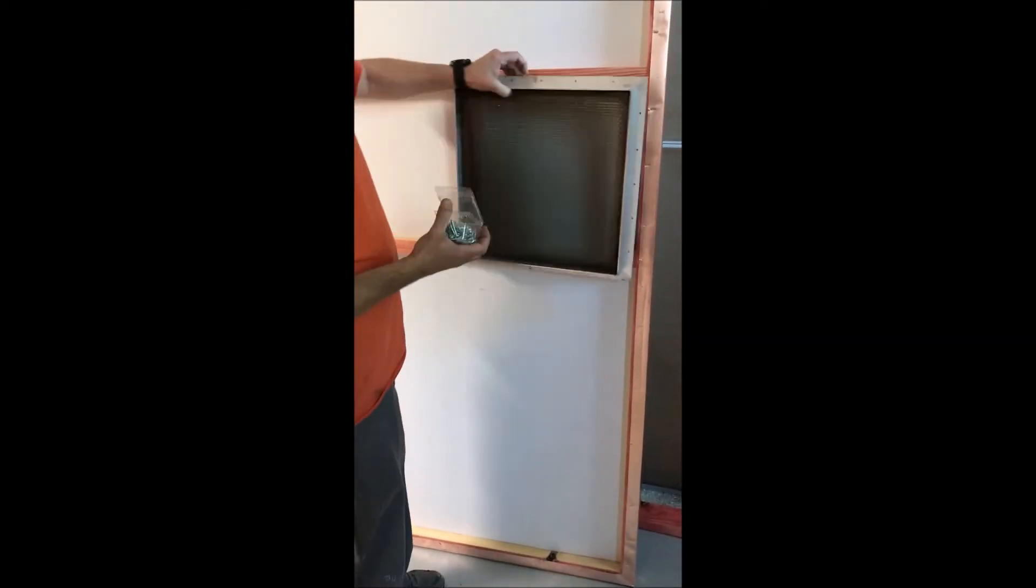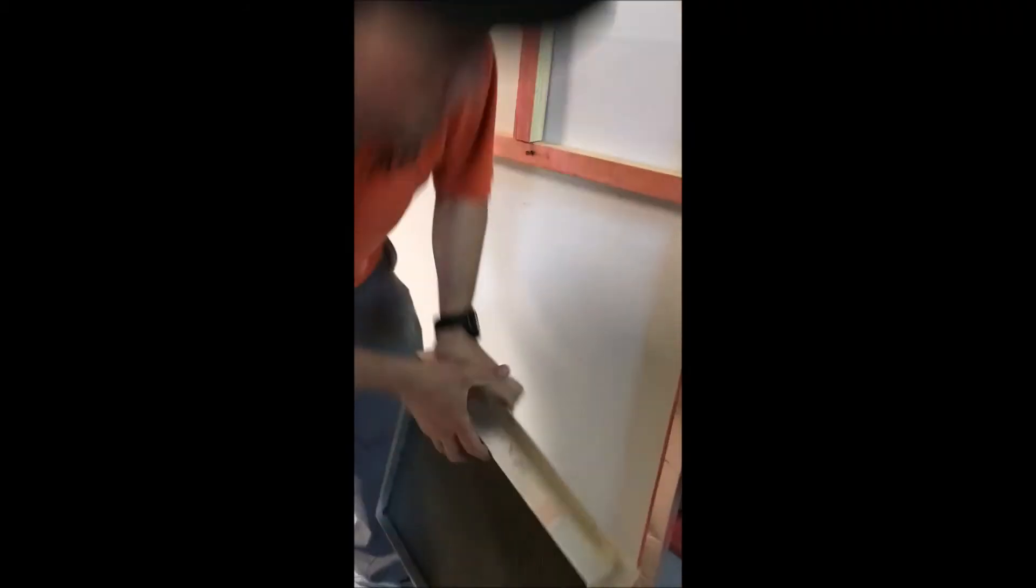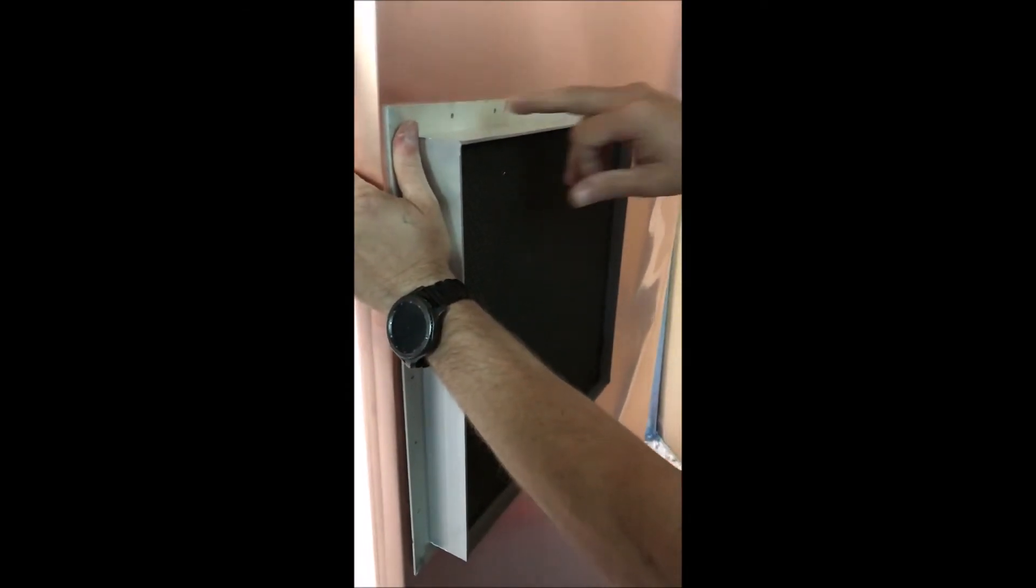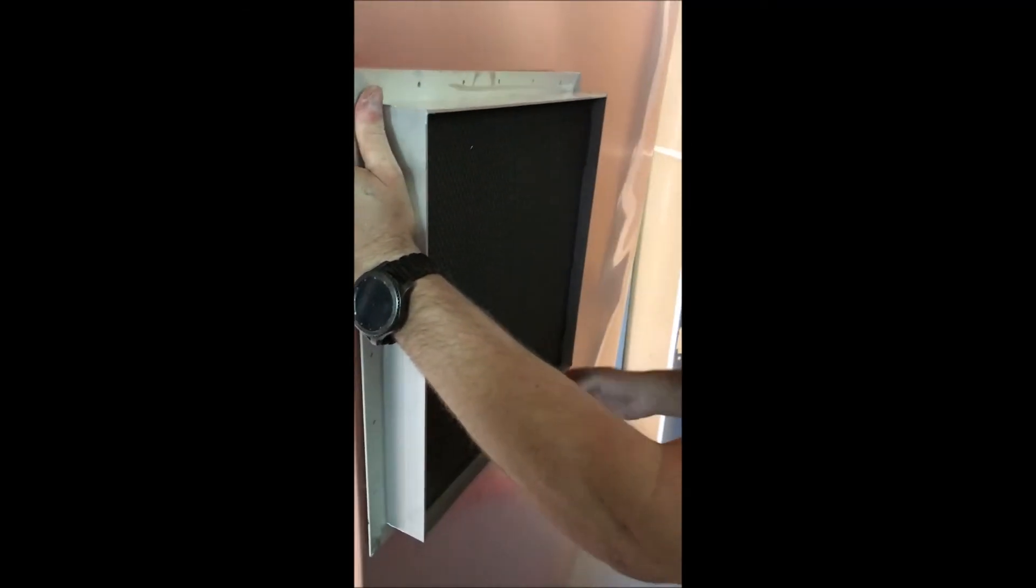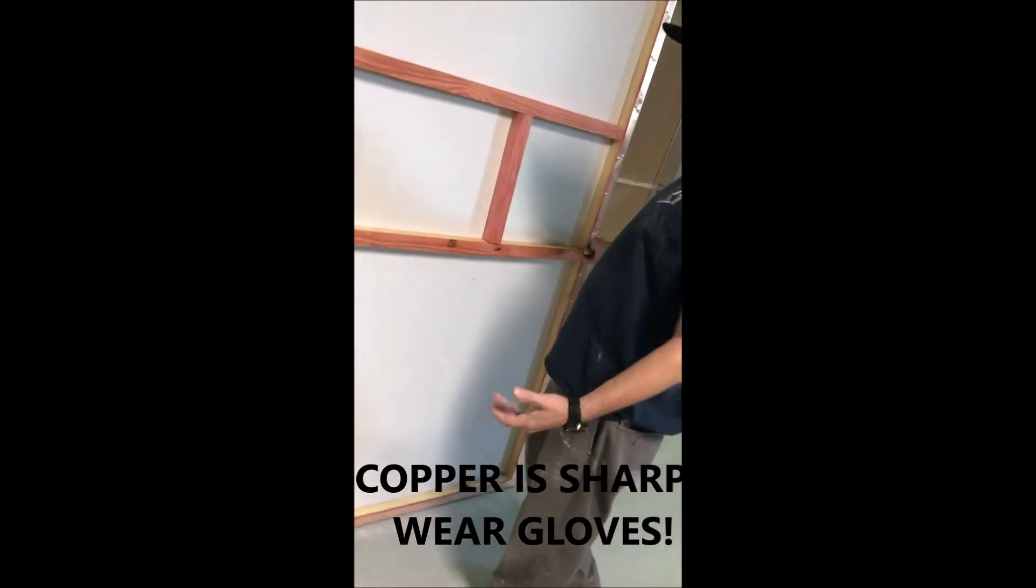Then you take some inch and a quarter screws and you do it from the top, from the copper side. You'll have it here and then you'll take the inch and a quarter screws and screw it off. And that's how you do the HVAC. That's a wrap, part two of how to install the HVAC.